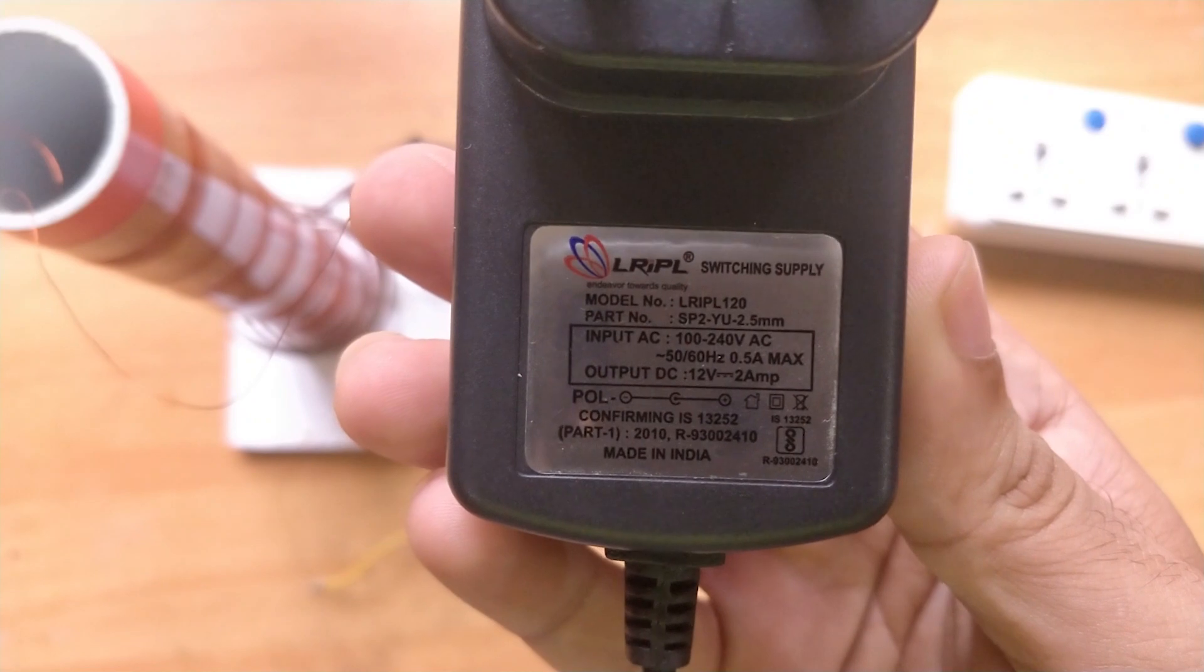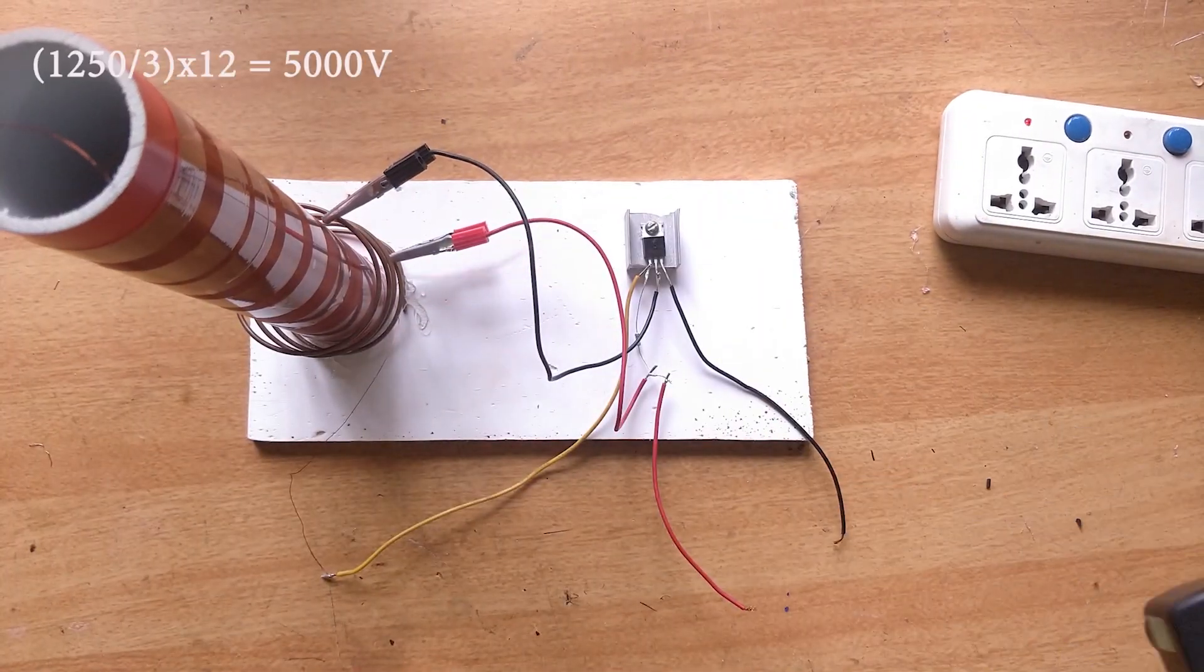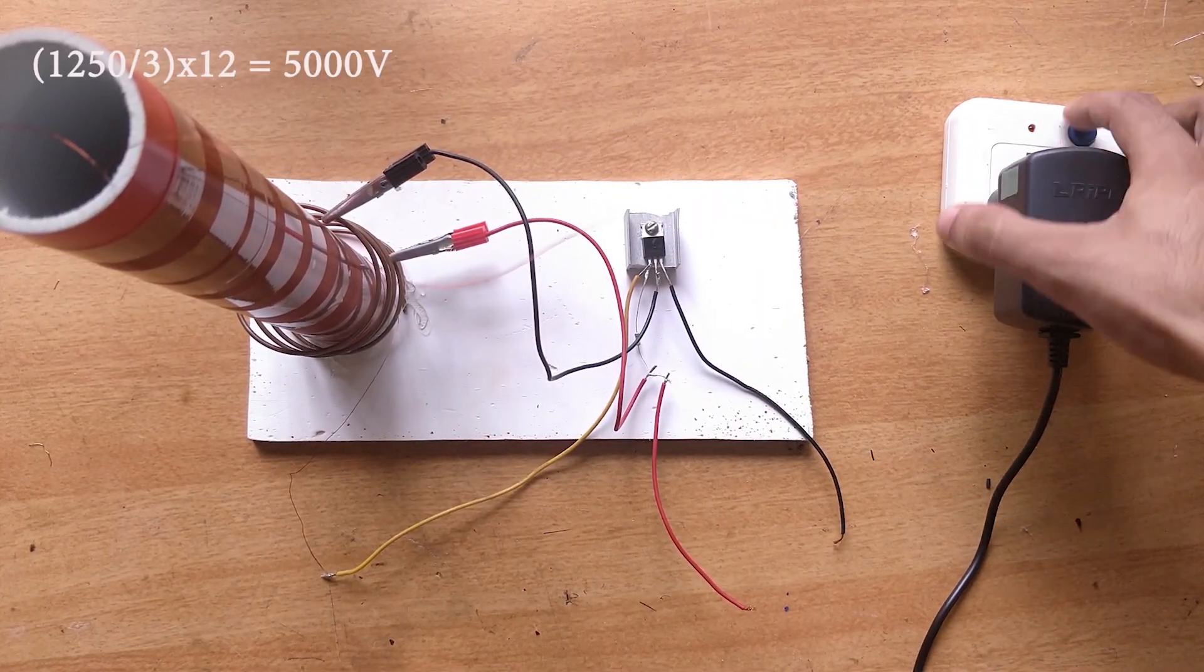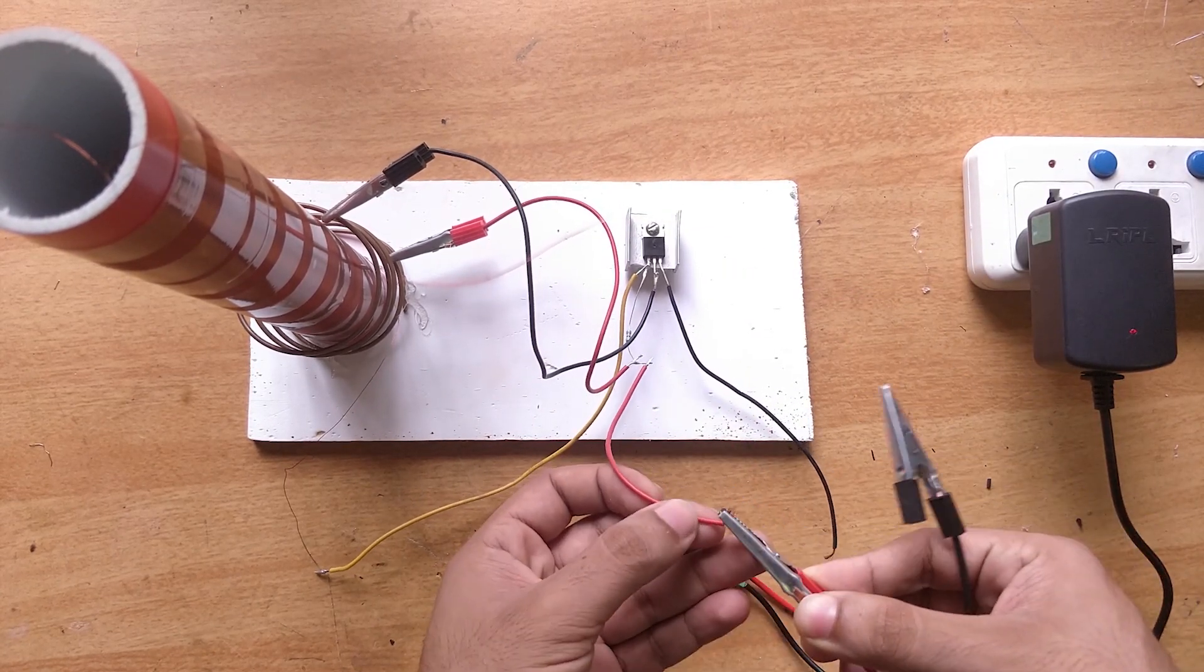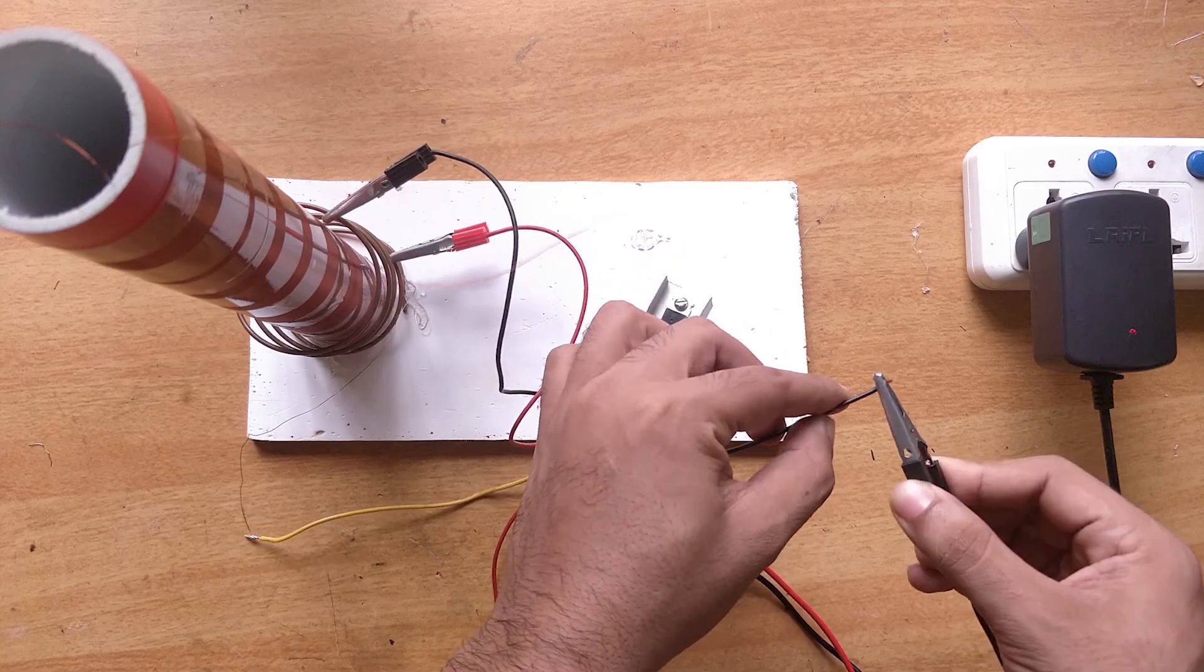Here I am using 12 volt as input. So it will be generating approximately 5000 volt at the output. So let us turn it on and see what happens.